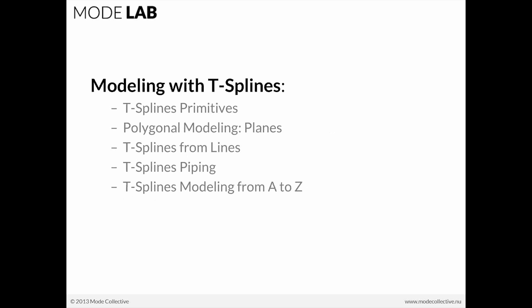So this afternoon, we're going to be looking at how to model with T-Splines using primitives, using planes or polygonal modeling, converting lines to T-Splines, working with piping functionality, and then lastly, we'll end on a case study that really looks at T-Splines modeling from A to Z. So the first four exercises are going to be kind of fast. We're going to just dive into the tool and try to explore it and see a few different ways that you can use it. And the last exercise will be a little bit longer so that we can focus our attention on the full pipeline of working with T-Splines.